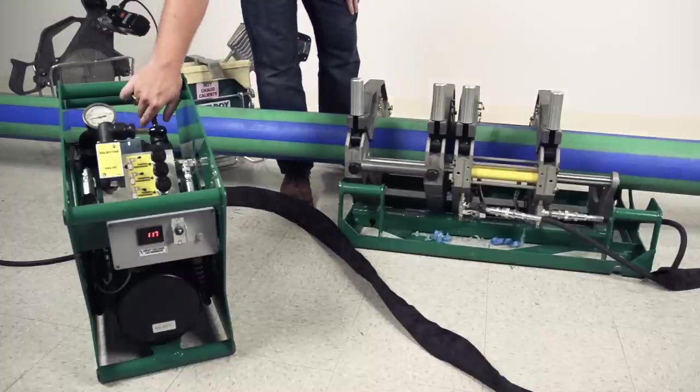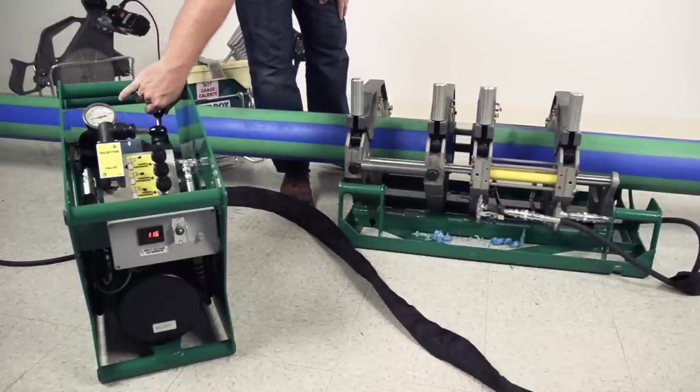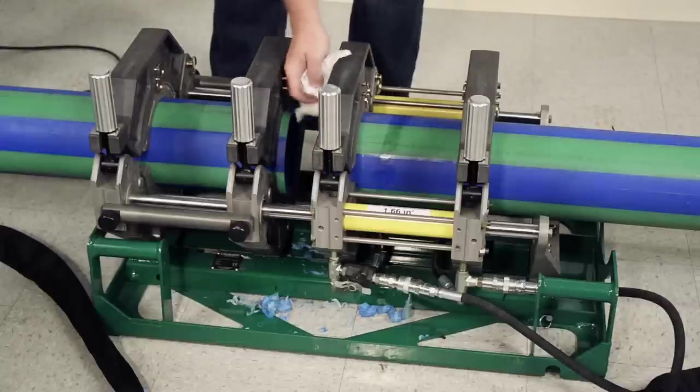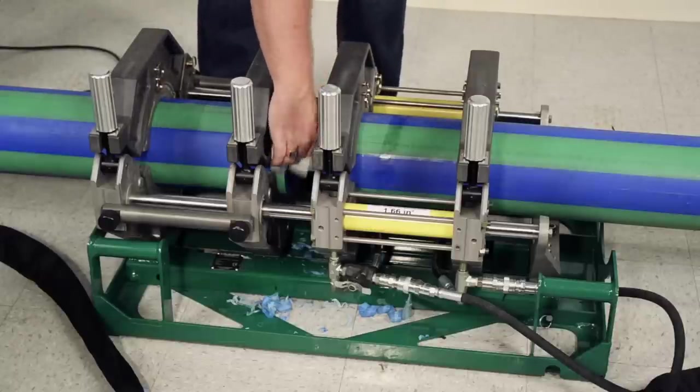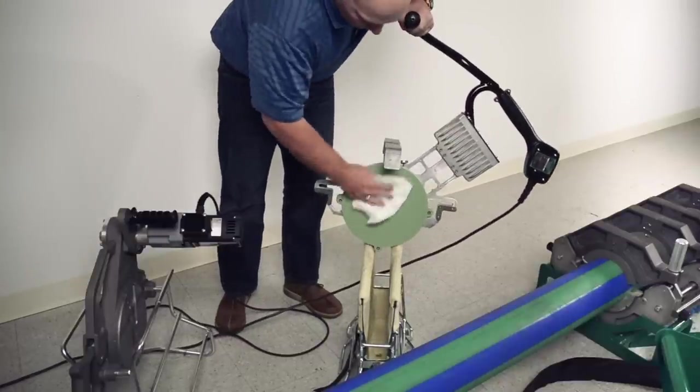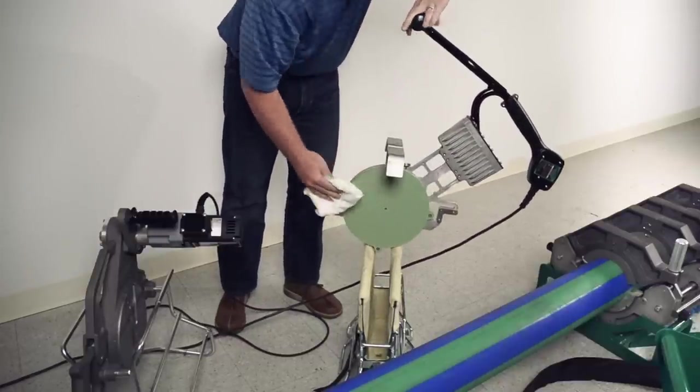It is just about time to heat our pipe, but before we can do that, we have to make sure that the fusion area is clean. Wipe away any debris from the jaws and pipe, but be sure not to touch the face of the pipe, as it is freshly faced and as clean as it can be. Wipe down both sides of the heater using a clean, dry, non-synthetic, lint-free towel.